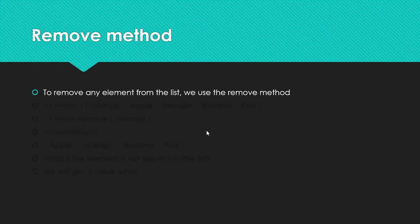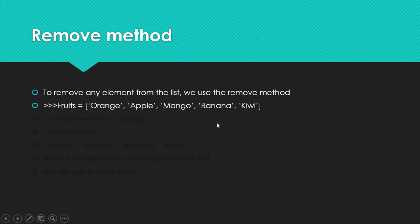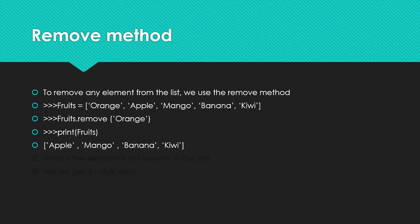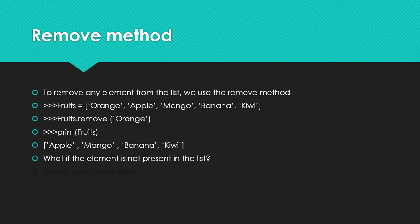To remove any element from the list, we use the remove method. For example, with fruits = [orange, apple, mango, banana, kiwi], we call fruits.remove('orange') and orange is removed. When printed, apple, mango, banana, kiwi are shown. But what if the element is not present in the list? If we call fruits.remove('strawberry') and strawberry is not in the list, we get a ValueError.